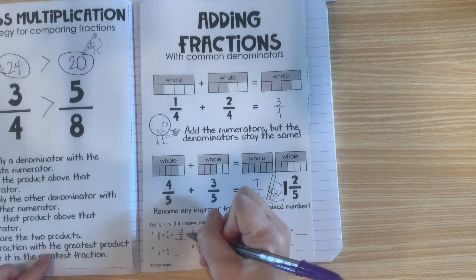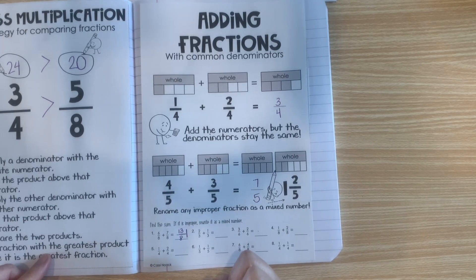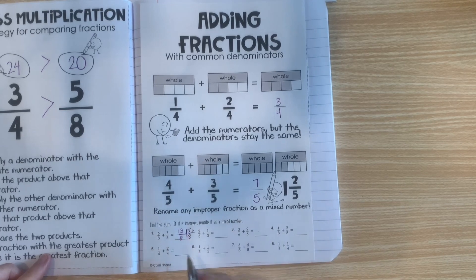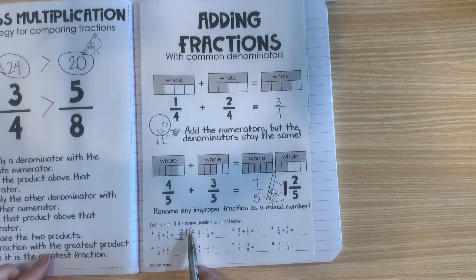So, 8 goes into 13 one time. Remainder, 5. My denominator stays the same. So, my answer is 1 and 5 eighths.